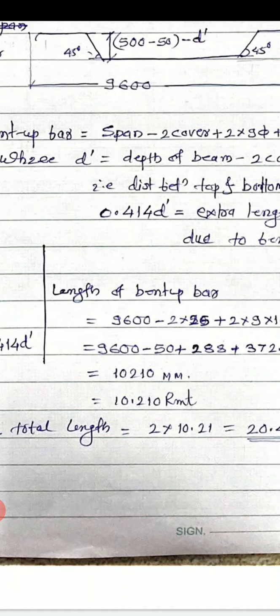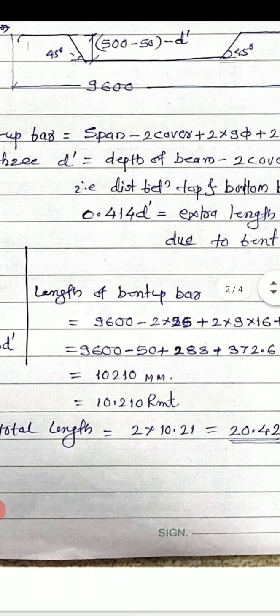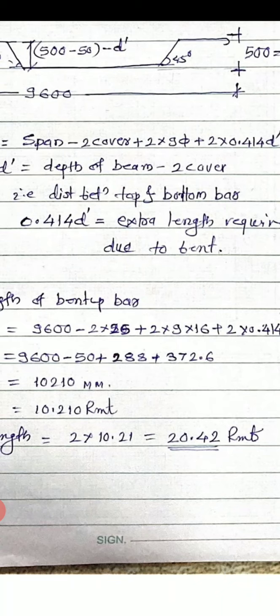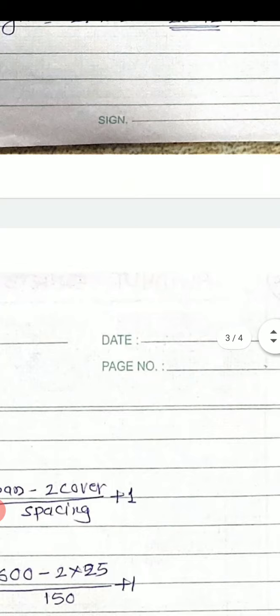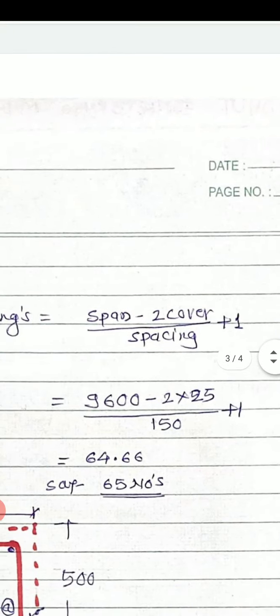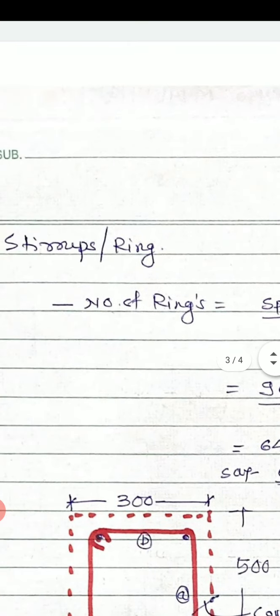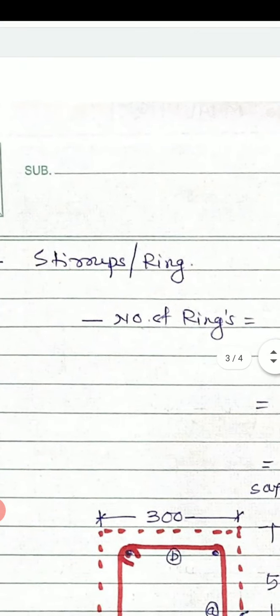For two bent-up bars, the total length required is 2 into 10.21 = 20.42 meters.